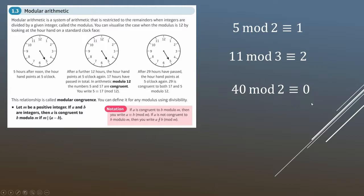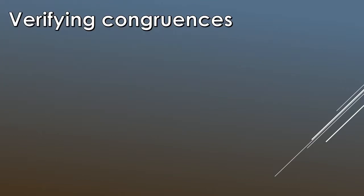If a is congruent to b modulo m, we write the three-line notation. If a is not congruent to b modulo m, we write the notation with a slash through it. Just be aware of that notation difference.